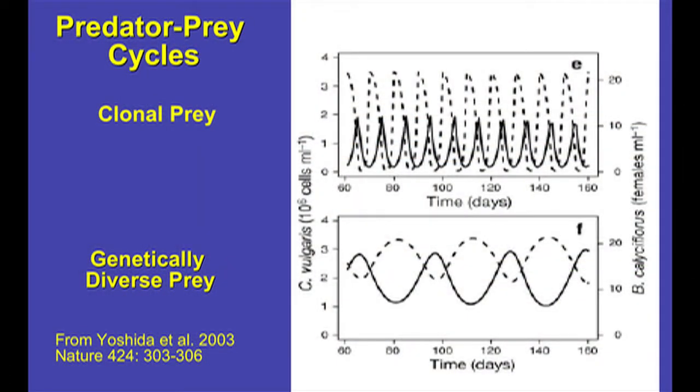Now the lower panel represents the exact same ecosystem with a single added level of complexity. The lower panel has an ecosystem that has two clones of prey rather than one clone of prey, and this simple degree of added complexity makes it possible for there to be evolution. Evolution is a change in the genetic composition of a population over time, and so when you have two clones of prey, what you can have is a change in the relative abundance of one clone, the percentage of the population that consists of one clone versus the other.